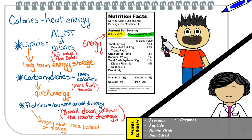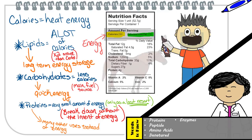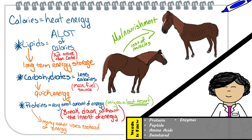Another reason we don't tend to use proteins for energy is that proteins have many other useful and essential functions in the body. However, if the body is low on lipids and carbohydrates — meaning it's in starvation mode — then that's when the body will begin to break down anything it can just to stay alive. The breakdown of proteins for energy will lead to a decrease of proteins used for essential functions, such as structural proteins found in muscles — causing muscle atrophy due to malnourishment.